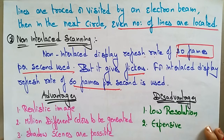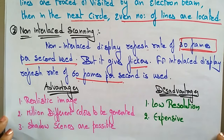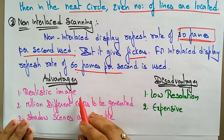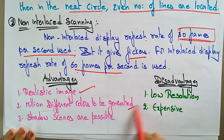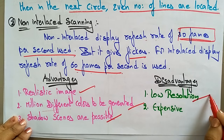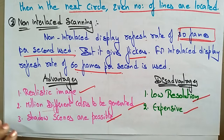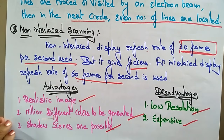Now let's see the advantages and disadvantages of raster scan. The advantages are: it produces realistic images, and millions of different colors can be generated. Shadow scenes are also possible. The disadvantages are: low resolution compared to random scan, and it is very expensive compared to random scan.